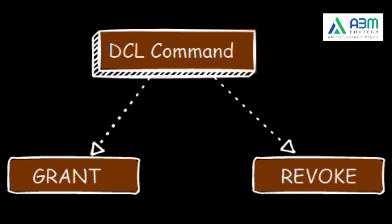After DDL and DML commands, we have DCL commands. DCL stands for Data Control Language. DCL commands are used to grant and take back authority from any database user. In DCL commands, we have GRANT and REVOKE. GRANT is used to give access privileges to a database, and REVOKE is used to take back permissions from the user.